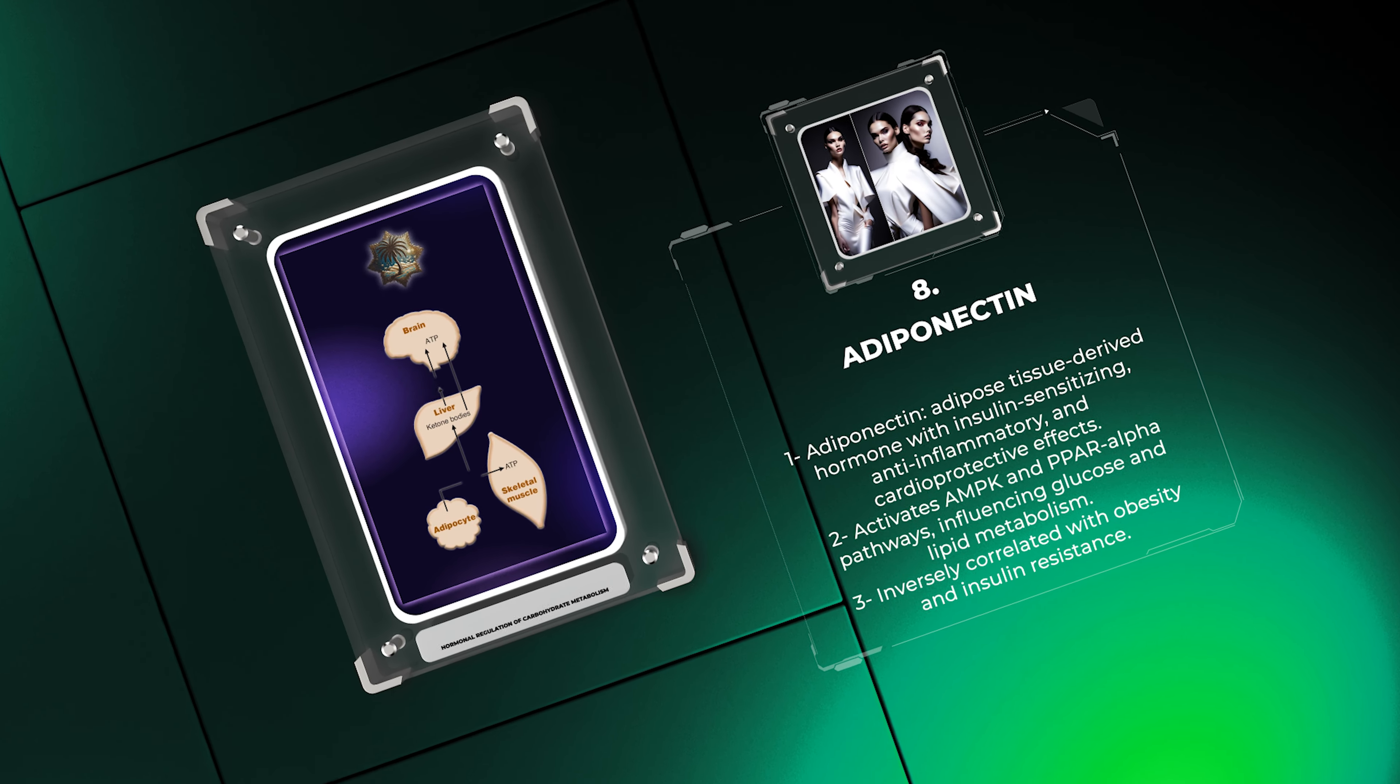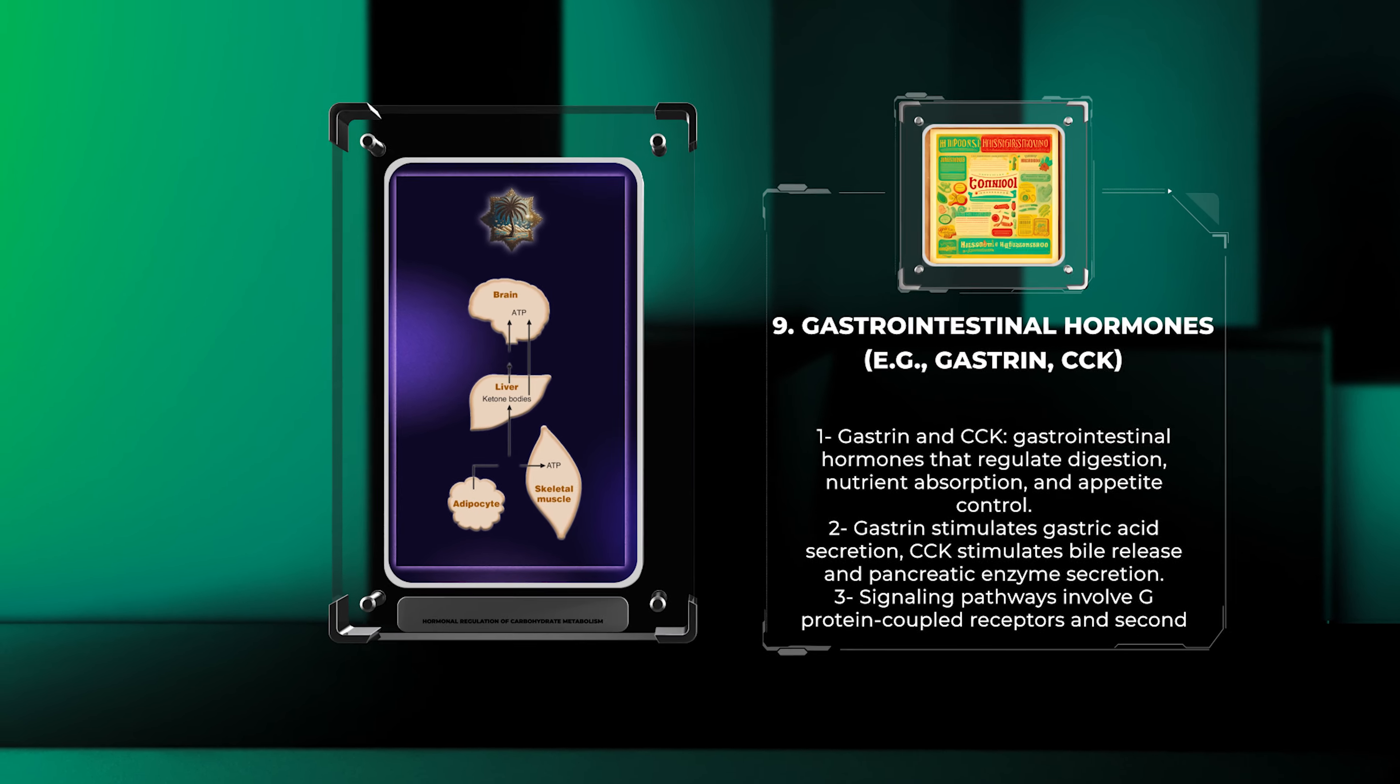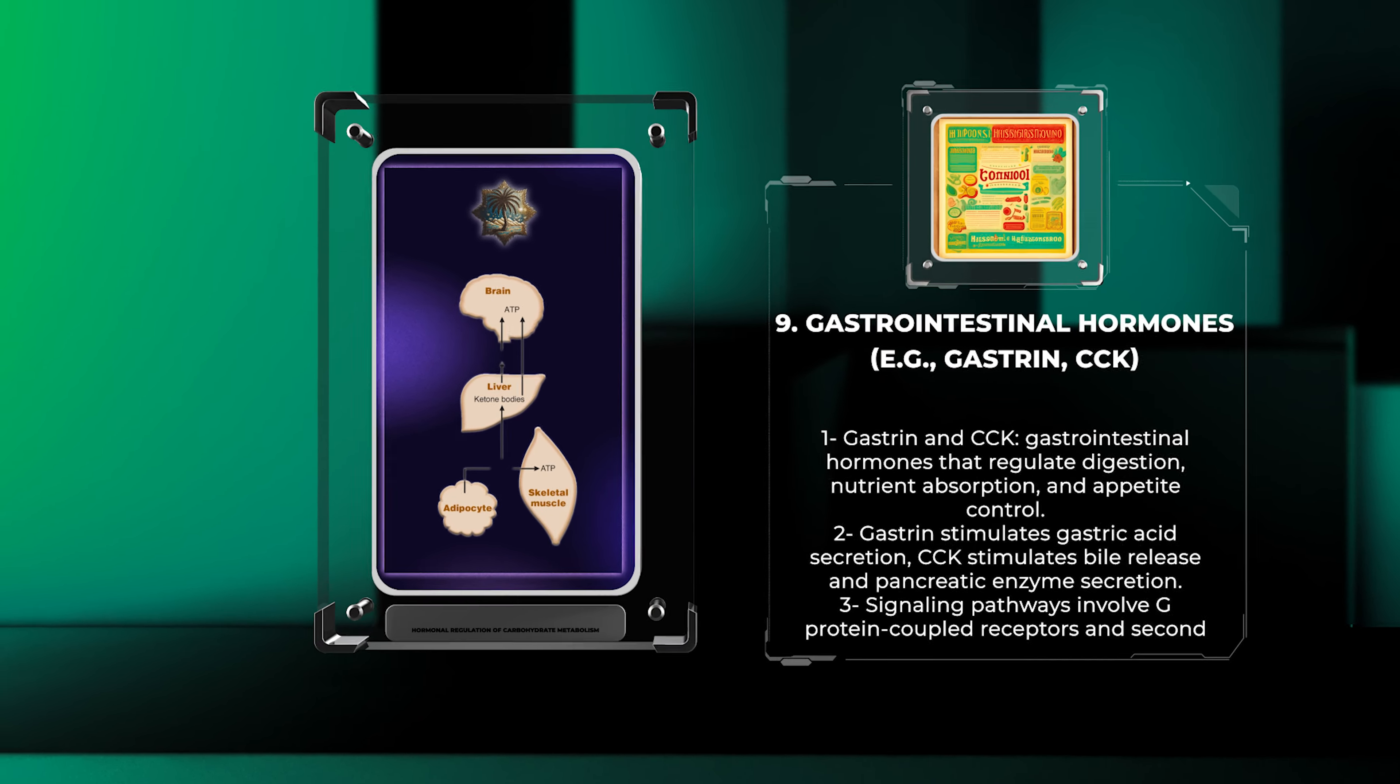AMPK and peroxisome proliferator-activated receptor alpha (PPARα) pathways, influencing glucose and lipid metabolism. Adiponectin levels are inversely correlated with obesity and insulin resistance. Gastrin and cholecystokinin (CCK) are examples of gastrointestinal hormones.